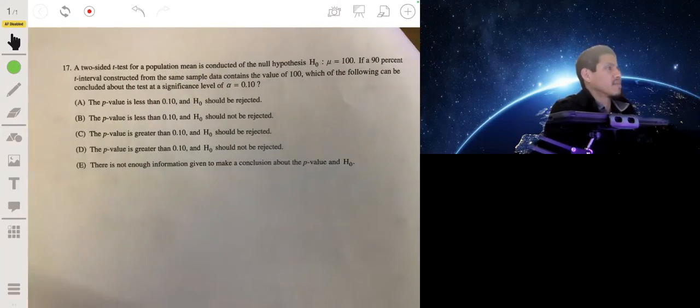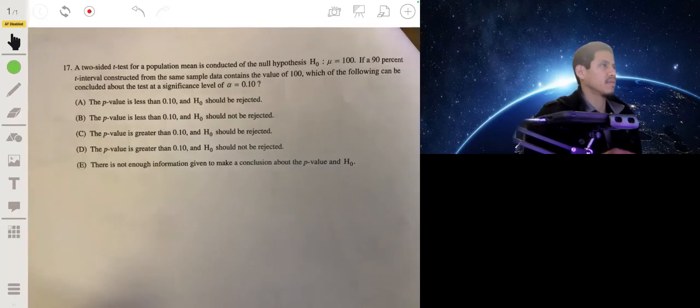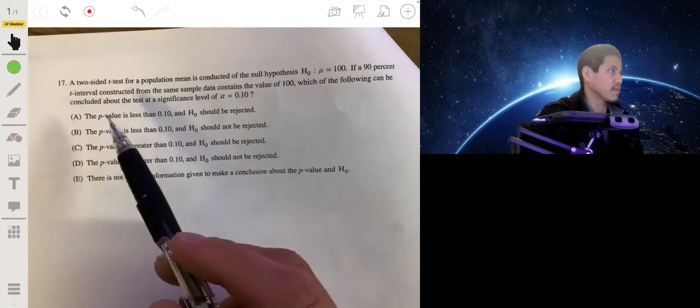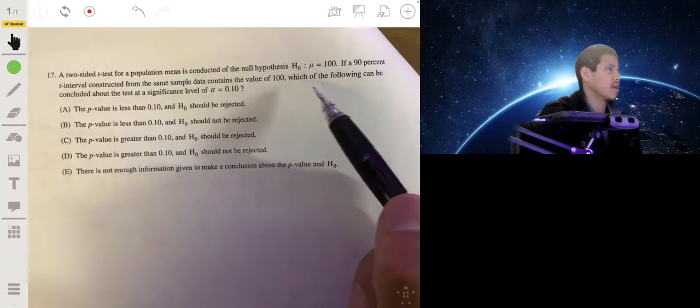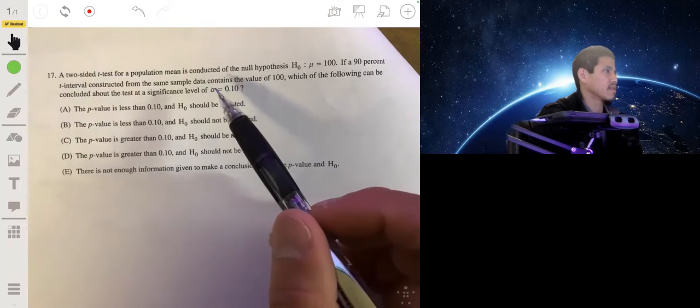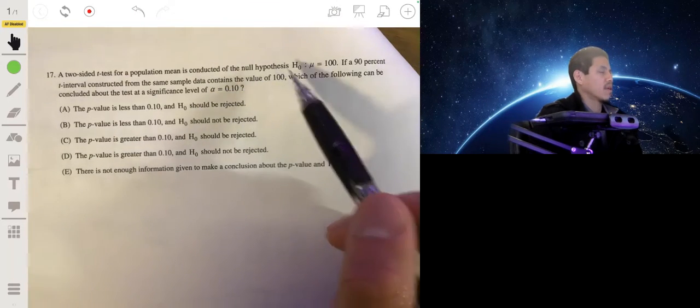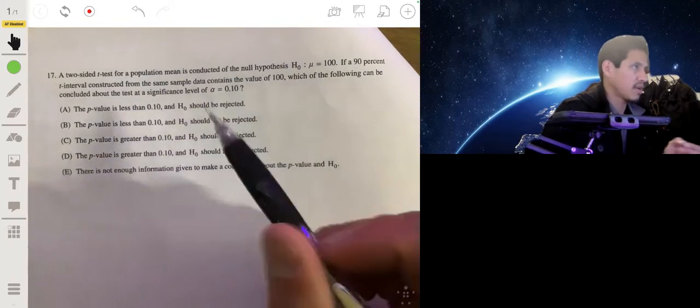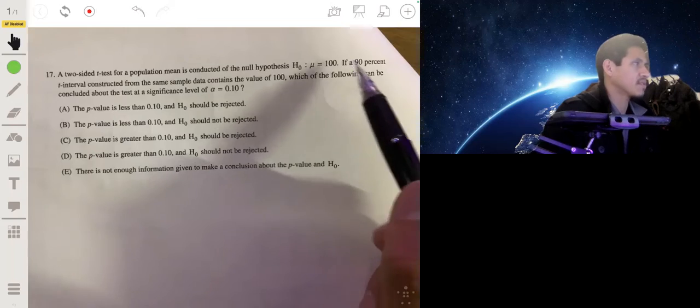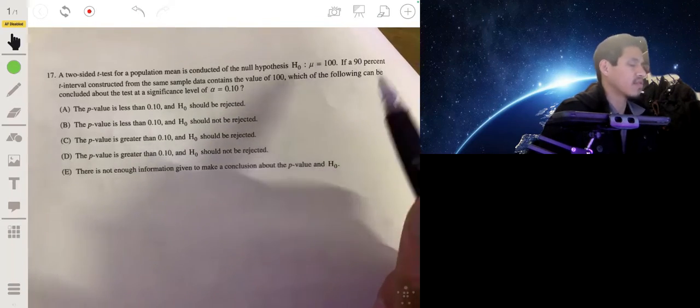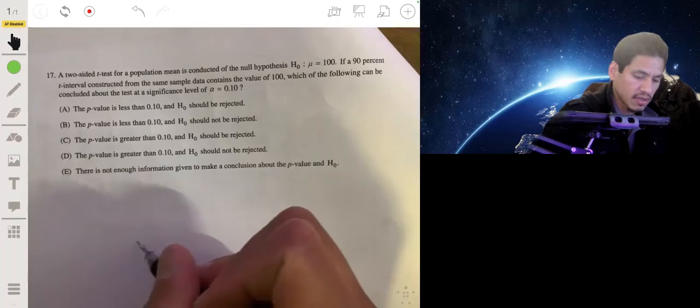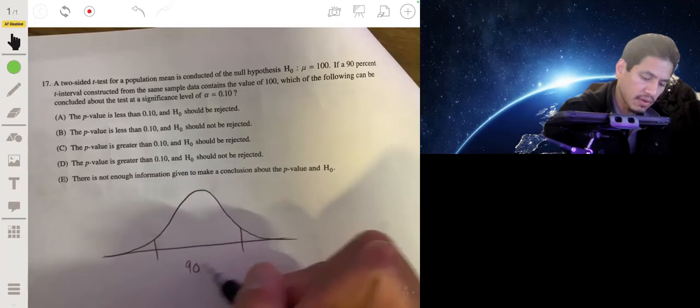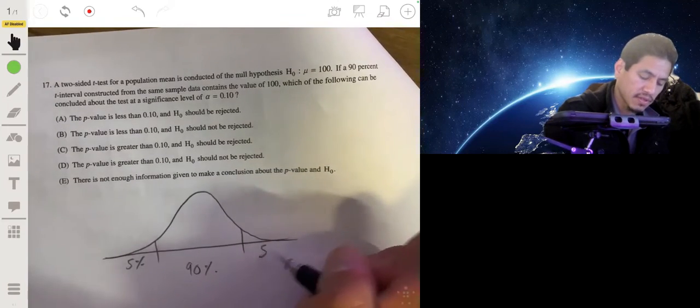Alright, a two-sided t-test for a population mean is conducted for the null hypothesis H0, where mu is equal to 100 at the 90% confidence interval. A 90% t interval constructed from the same sample data contains the value of 100, which of the following can be concluded about the test at significance level alpha? Okay, I want to explain this verbally, but I'll draw a picture. If we make a 90% confidence interval, that means there's 10% left over, 5% to the left and right. So I'm drawing a normal curve. So let's go up, and this is 90% in the middle. That means there's 5% over here, 5% over there.